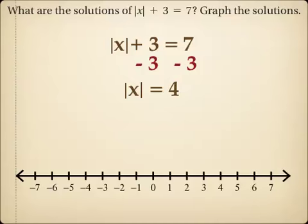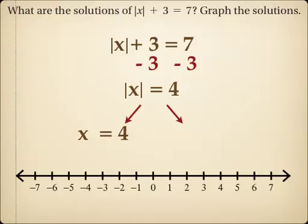Now that the absolute value is isolated, I can set it equal to positive 4 or negative 4. So x could equal positive 4 or x could equal negative 4. Both 4 and negative 4 are solutions. When you plug in 4, the absolute value of 4 is 4, plus 3 is 7. And when you plug in negative 4, the absolute value of negative 4 is 4, plus 3 is 7.